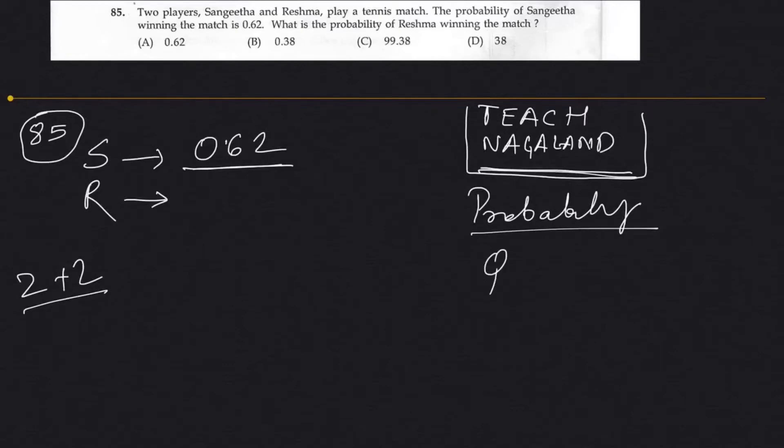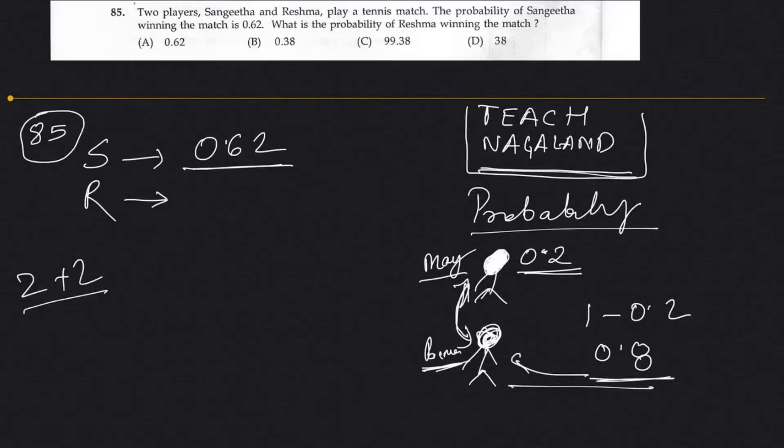Probability works like this. Suppose there are two persons, maybe there are already boxers boxing. So suppose people are predicting. The probability of Mayweather winning the match is suppose 0.2. What is the probability of Pacman winning the match? Simply 1 minus that. The probability of Pacman winning the match will be 0.8.